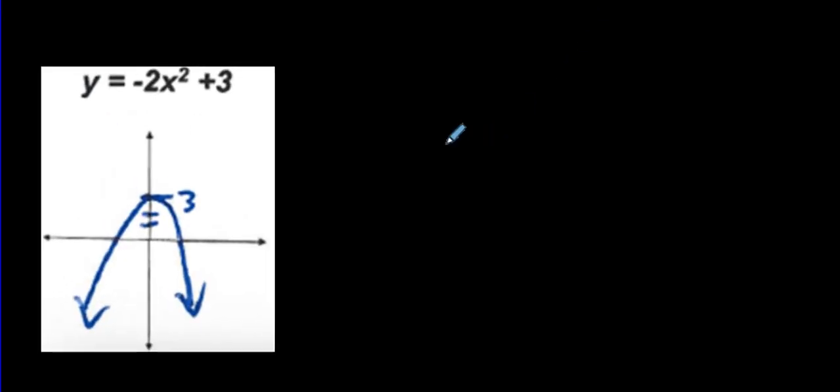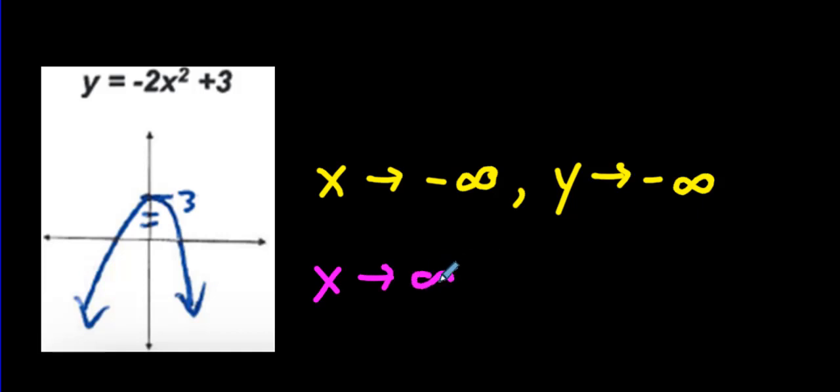So here's another example. Here's a parabola. As x approaches to the left, or negative infinity, y approaches, this time it's going down forever. So negative infinity. Make sure you don't have a positive infinity. And as x approaches positive infinity, or it moves to the right, y approaches again negative infinity.